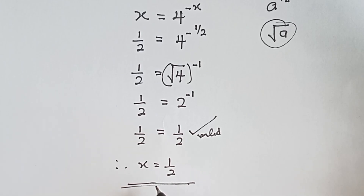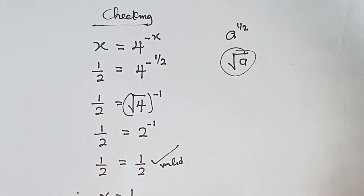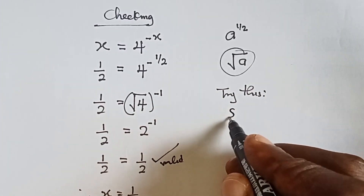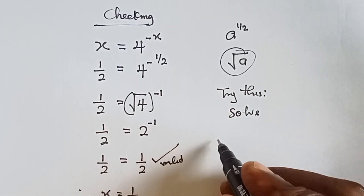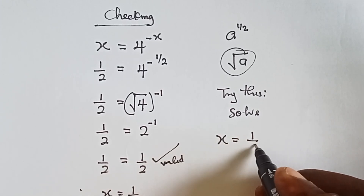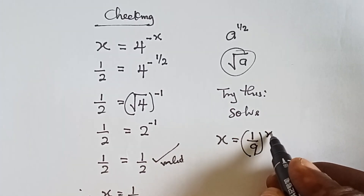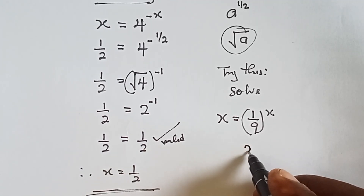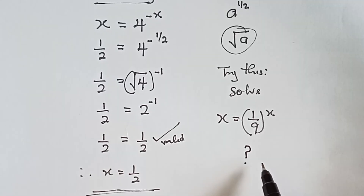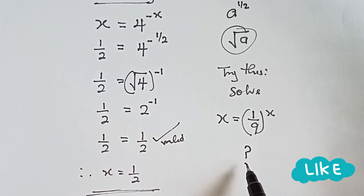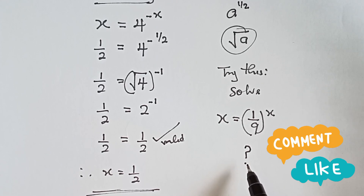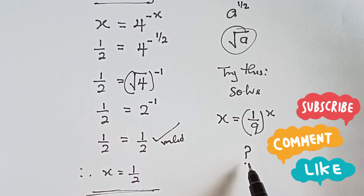That's the easiest way to do it. Now let's try this: solve x equals to 1 over 9 raised to the power x, and write your answer in the comment section. Thanks for joining — don't forget to like, comment, and share this video. If you have not subscribed to this channel, please do subscribe. See you next time.